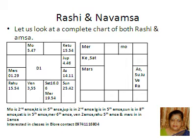What we have understood is that the planets placed in D1 — their Amsas are their corresponding placements in D9. The use of learning the Navamsha position is not only to understand the quality of the spouse the native will have, but also to understand the strength of each planet — whether a planet has gone to a favorable or unfavorable house.